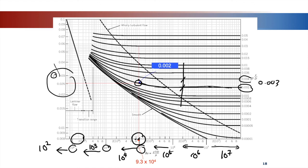If your epsilon over D falls between two labeled lines, for example between 0.002 and 0.004, and your value is 0.003, you cannot simply assume the midpoint. You must use interpolation. Measure the length between the two epsilon over D lines on your Reynolds number vertical line using a ruler, then interpolate to find the correct intersection point.